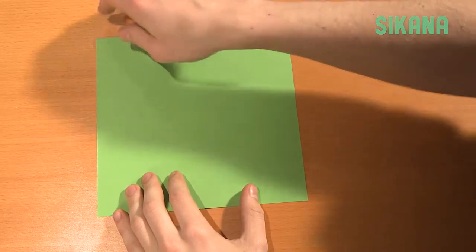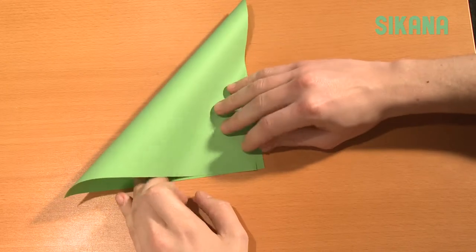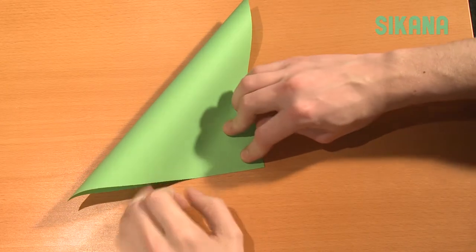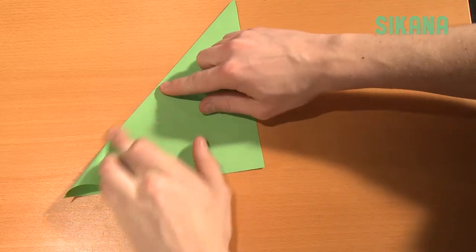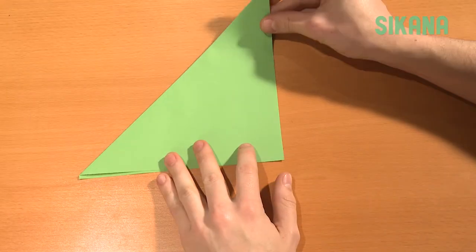Take a square sheet of paper and fold it diagonally. Then fold this point like this.